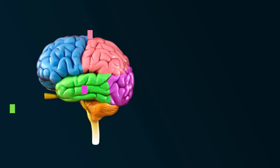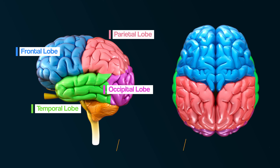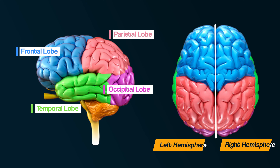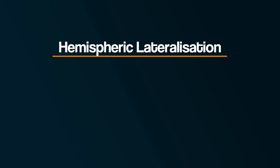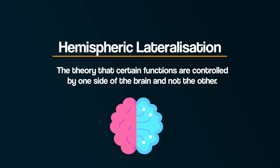A link below is a free worksheet that goes with this video. So say hello again to your brain. Did you know that your brain has two sides to it, or what's called two hemispheres — a left and a right? Hemispheric lateralisation is the idea that certain functions are controlled by one side of the brain and not the other.